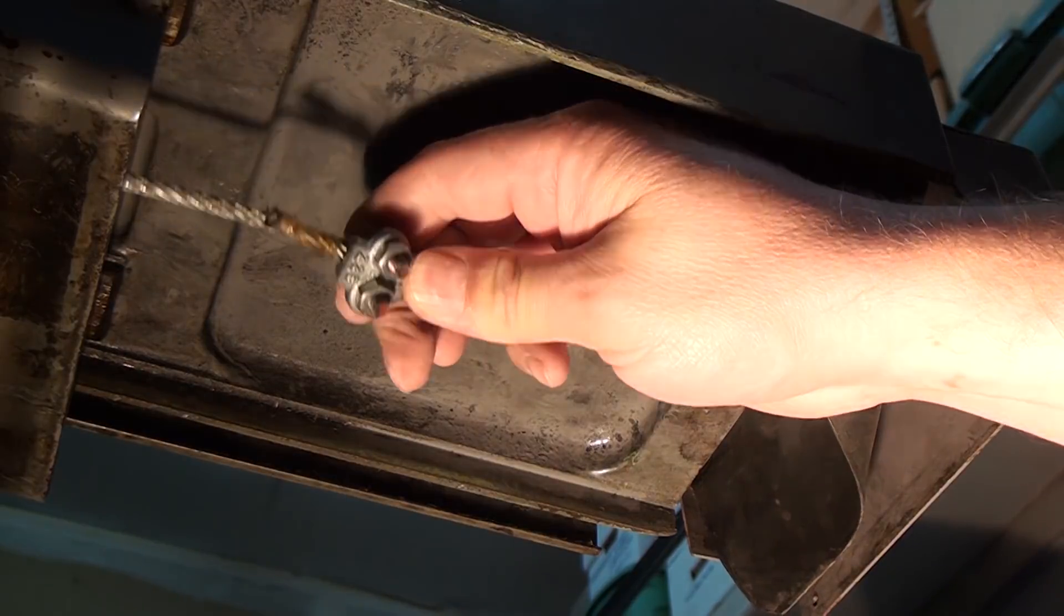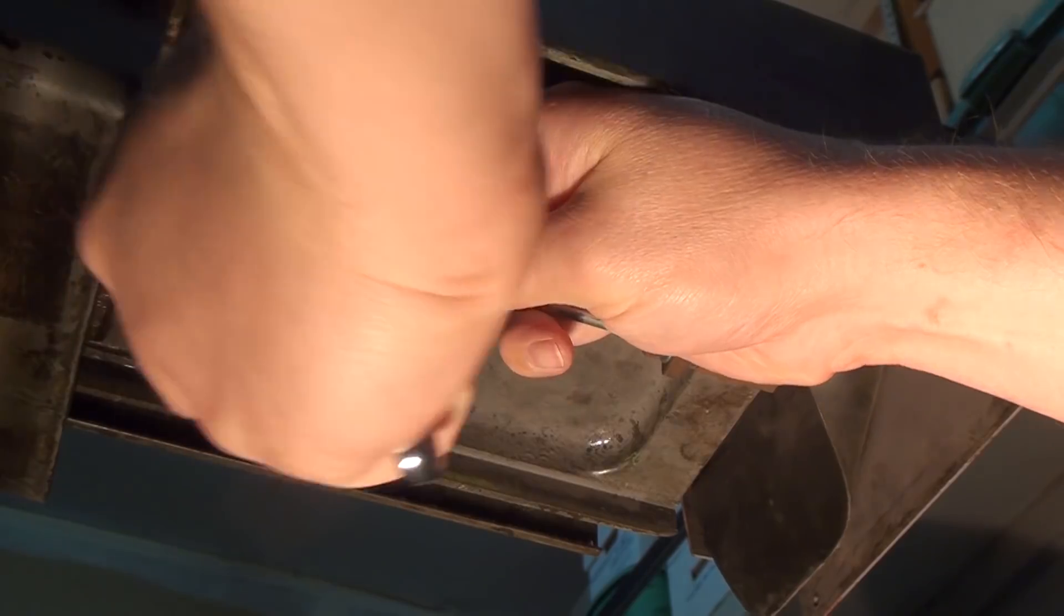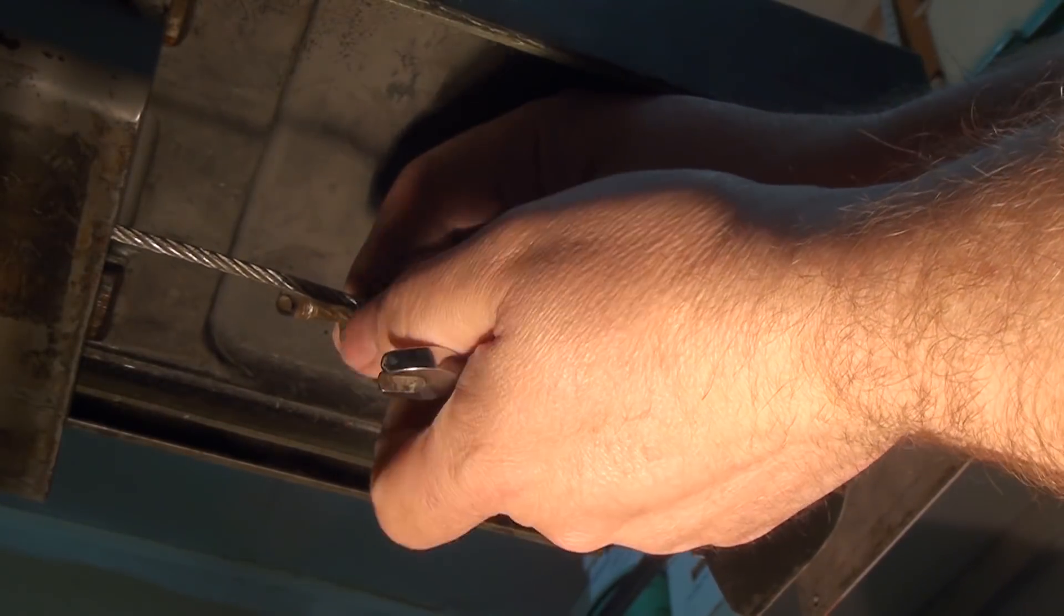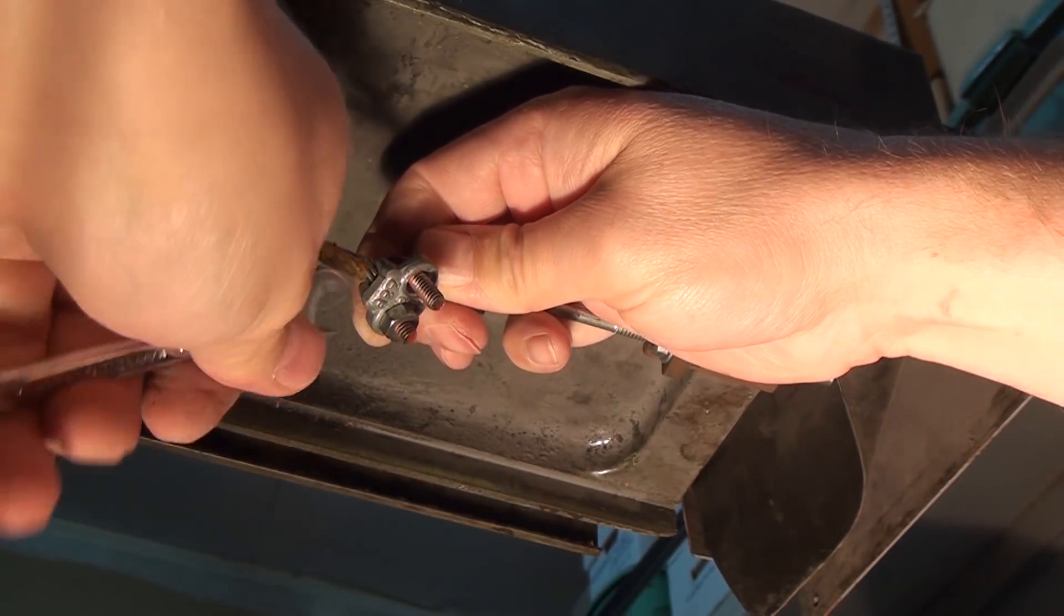Over here on the right side, you can see this appears to be some hardware store repair because in the manual, in the parts manual, it actually lists another tension drum over here on the right side of the table.